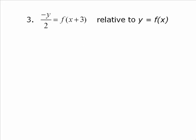Here's a more interesting one, a little more complicated. Negative y over 2 is equal to f at x plus 3, relative to y equal f at x. So this is any function y equal f at x. And I am going to clean this one up a little bit. So if I multiply by 2 to both sides to clear that denominator, and then divide by the negative 1, you get y is equal to negative 2 f at x plus 3.